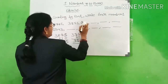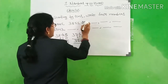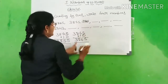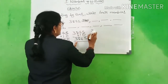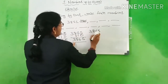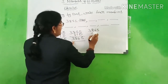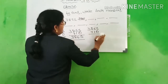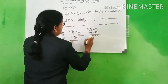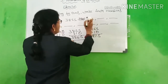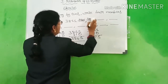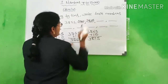You have to write here: 3,865. Then count 3,865 plus 10. 5, 6 plus 1 is 7, 8, 3. What is the answer? 3,875.